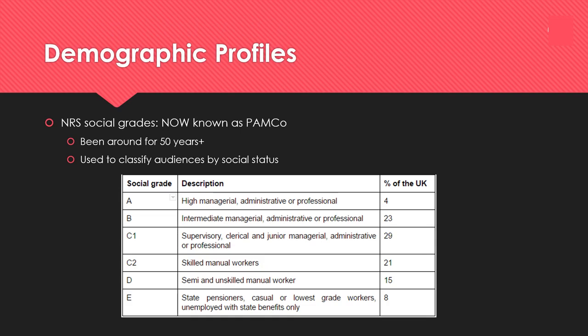When it comes to demographic profiles, there's something called social grades or social classes, which are used to classify audiences into a particular social class. There are six different categories: A, B, C1, C2, D, and E. They are usually split into two halves — ABC1 and C2DE — to make things a little more simplified.